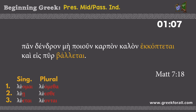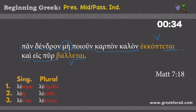Matthew chapter 7: 'pan dendron mē poioun karpon kalon ekkoitetai kai eis pyr balletai.' So: 'every tree' — 'not making,' or in English 'not producing' or 'not bearing' — 'a good fruit.' We have two verbs, 'ekkoitetai' and 'balletai,' and both share the same third person singular ending, which agrees with our subject 'every tree.' The context helps us identify that these verbs are passive. So: 'Every tree which is not producing a good fruit is cut off and is thrown into fire.'